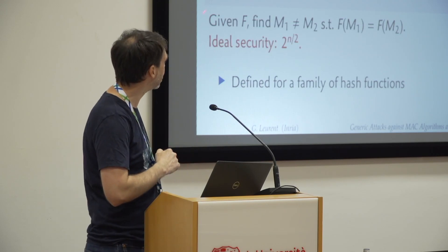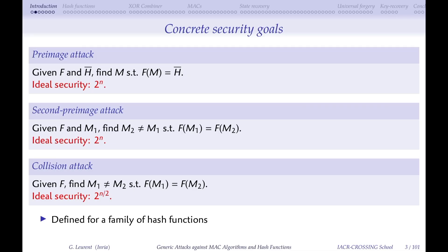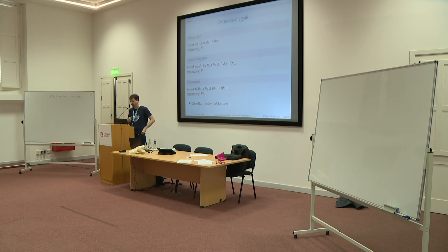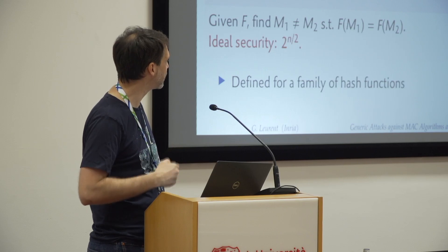The third security notion is the collision attack, where the goal is to find two different messages with the same output. The important difference from the second pre-image attack is that the attacker can choose both messages. Because of the birthday paradox, even with an ideal hash function you only need to try about 2^(n/2) different messages to expect to find a collision.